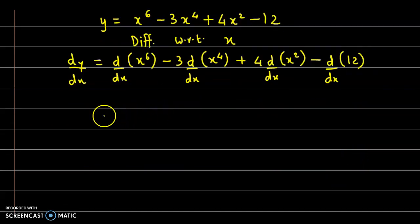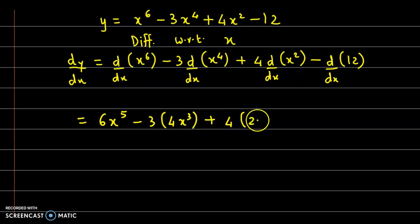Now we apply the formula for derivatives. Derivative of x raised to 6 is 6 times x raised to 5, minus 3 into derivative of x raised to 4 is 4 times x cube, plus 4 into derivative of x square is 2x, minus derivative of 12—that's a constant term, so derivative is 0.